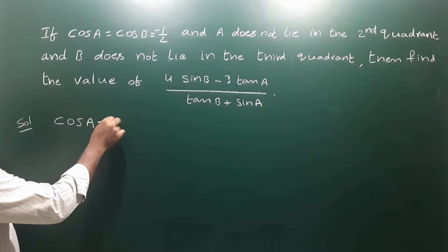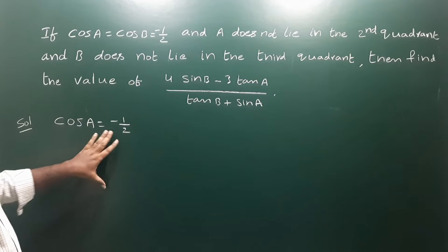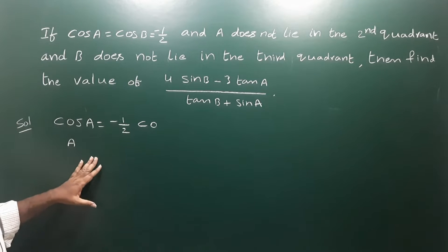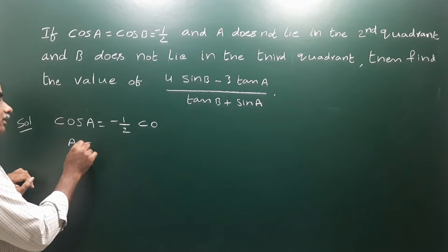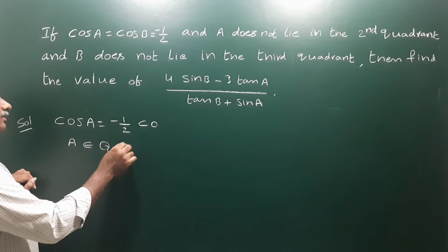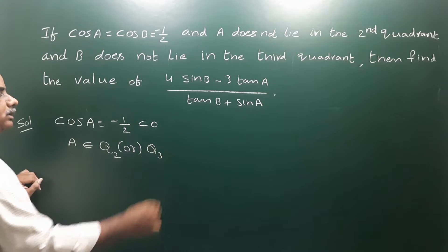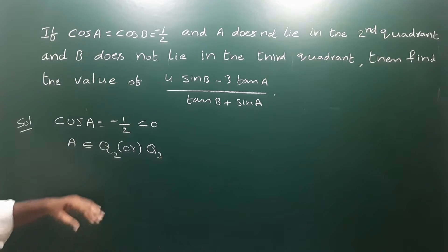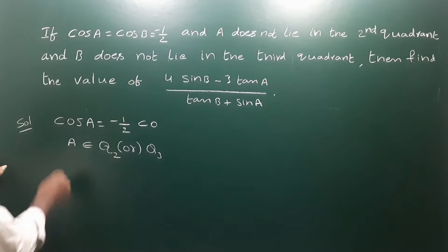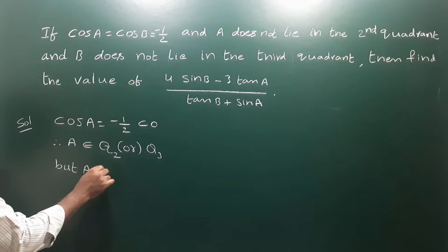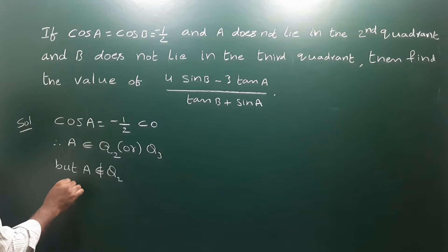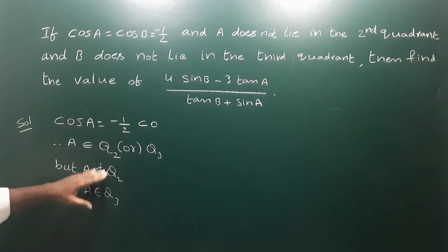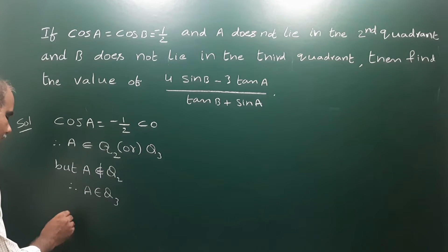cos a is equal to minus 1 by 2, which is negative — less than 0. So cos a is negative. In which quadrant does a lie if cos is negative? Therefore a belongs to the second quadrant or the third quadrant. But given that a does not belong to Q2, we confirm a belongs to Q3.